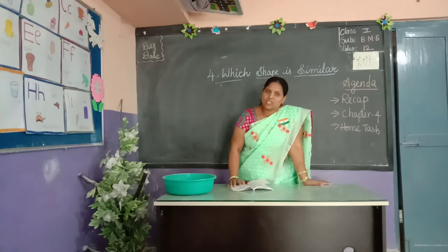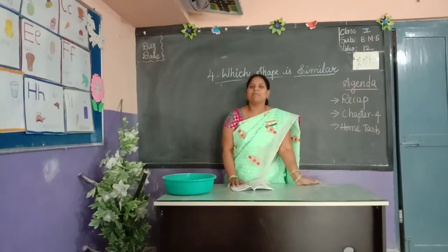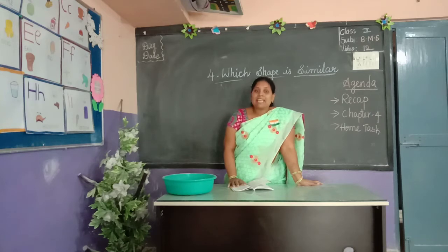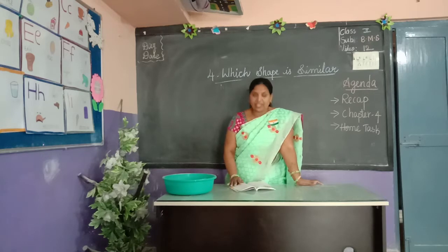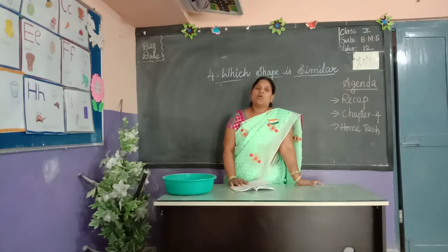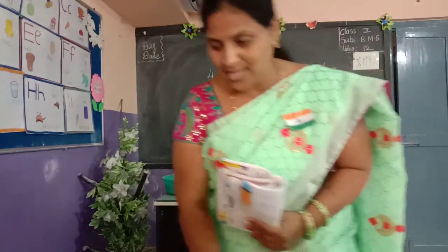Okay children, we are in which block, which chapter now? Yes, we are in the 4th chapter. The name of the 4th chapter is 'Which shape is similar?' — similar means same group or same picture. Already I gave the previous class SSD textbook page number 57 and 58 KNC. Your class teacher already sent you PDF for BMSD. So KNC children, take out your BMS sheet. SSG children, take out your BMS book, page number 57.